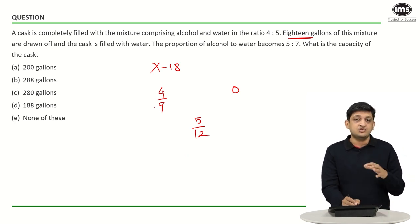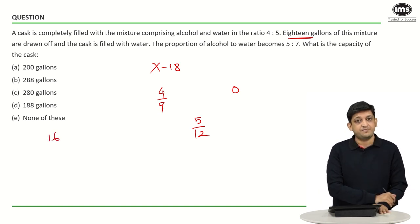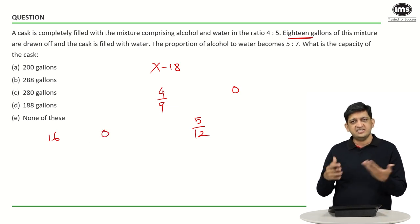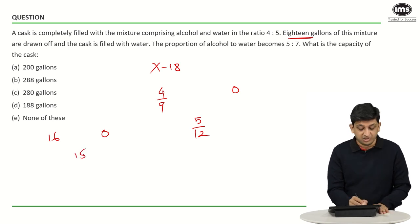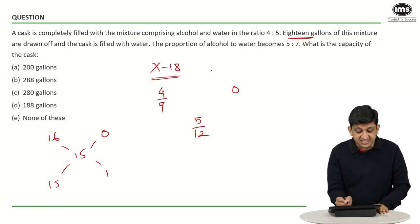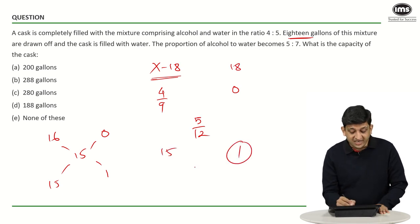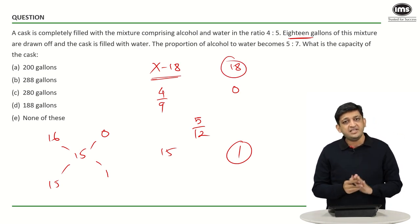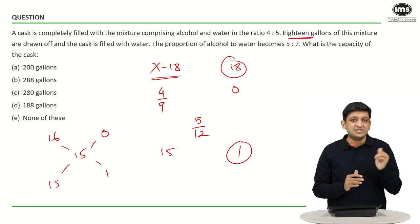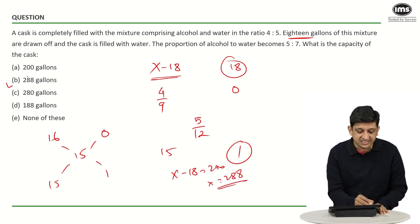We also have 0/36 for the pure water added. Using the rule of allegation: gap from 0 to 15 is 15; gap from 15 to 16 is 1. So the ratio of the existing solution to the water replaced should be 15:1. If 1 part corresponds to 18 gallons, then 15 parts corresponds to 15 × 18 = 270. So x minus 18 = 270, which means x = 288. That is our answer.